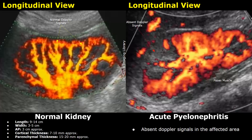In the normal kidney, blood flow is present throughout, indicating normal perfusion. The image on the right is of acute pyelonephritis where the upper pole was affected. On power Doppler, no blood flow is seen in the affected area — the power Doppler signals are absent. This region was hyperechoic, had loss of corticomedullary differentiation, and blood flow was absent.